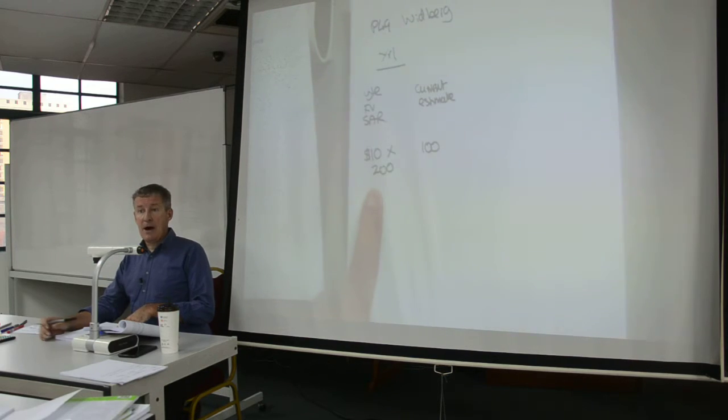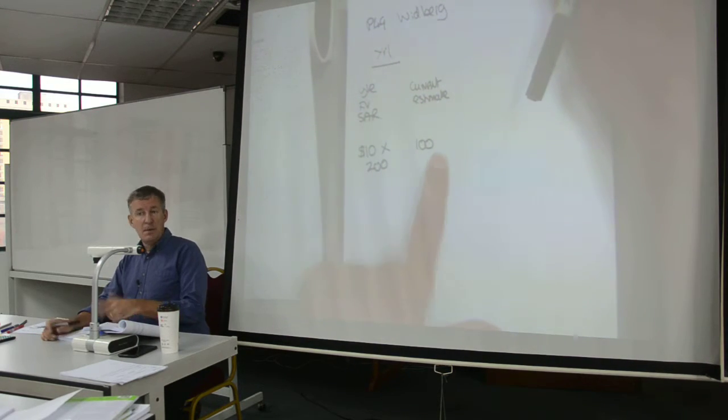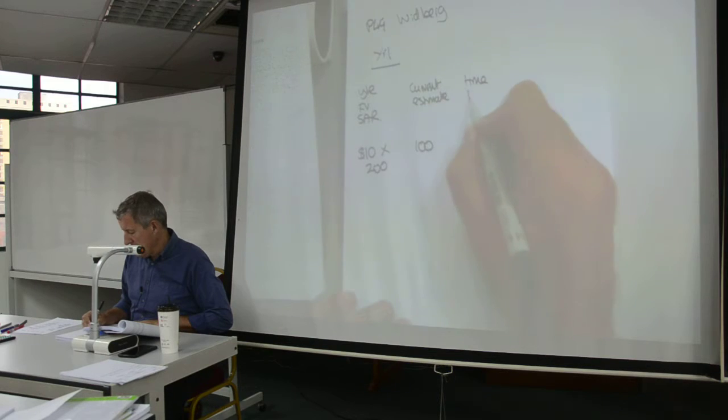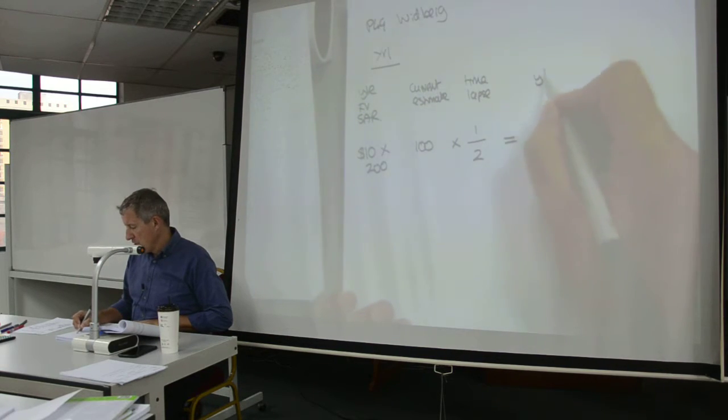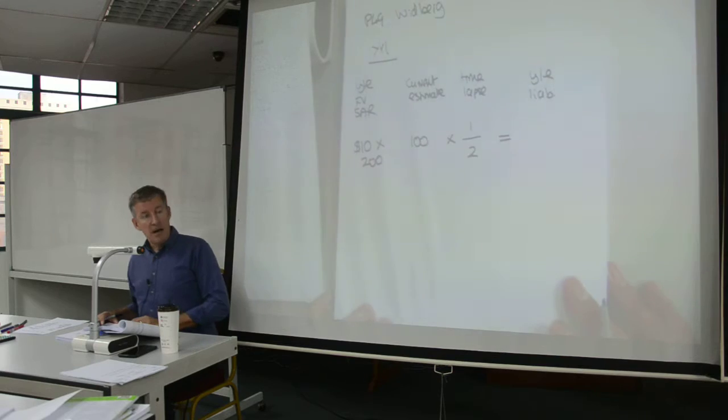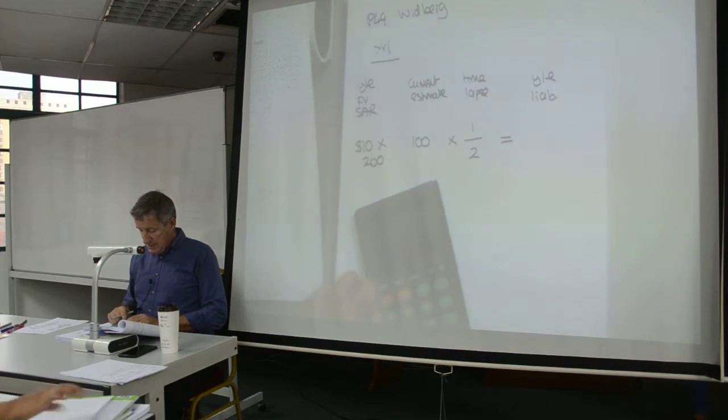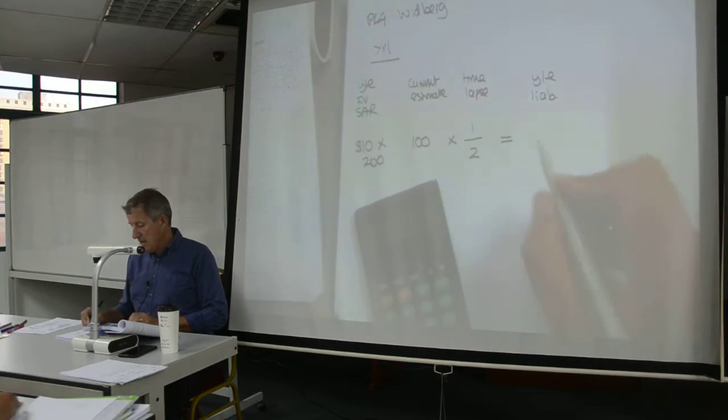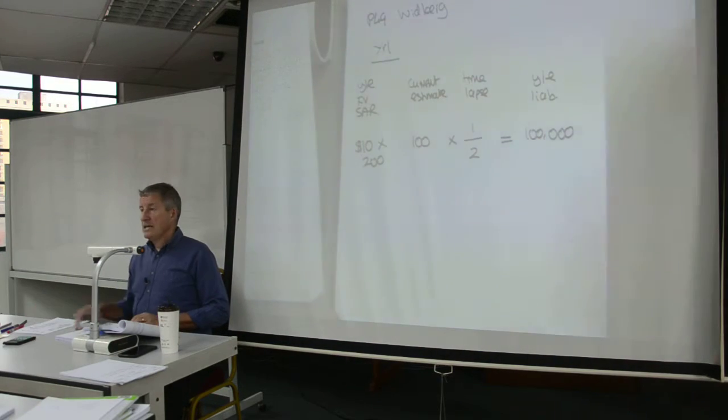Now, you could, if you wanted to, multiply by 100 here, and then make that a percentage. But I'm just quite happy dealing with the current estimate. Now, in terms of the time lapse, it is a two-year scheme, and we are one year into the two-year scheme. So, this will represent my year-end liability. So, let me just take it gently. 10 times 200 times 100 divided by 2 is giving me a nice round 100,000. So, my year-end liability is 100,000.